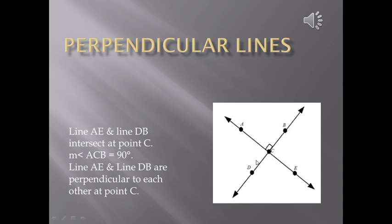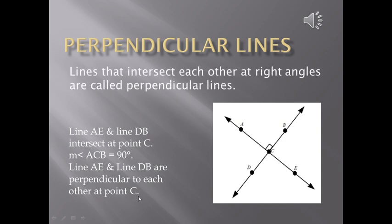Measure of angle ACB, measure of angle ACD, measure of angle DCE and measure of angle BCE. All angles measured is equal to 90 degrees. All angles are right angles. Such lines are called as perpendicular lines. So line AE and line DB are perpendicular to each other at point C. Lines that intersect each other at right angles are called perpendicular lines.